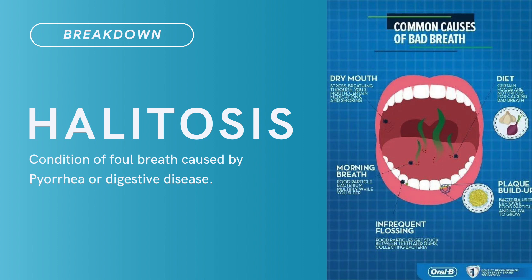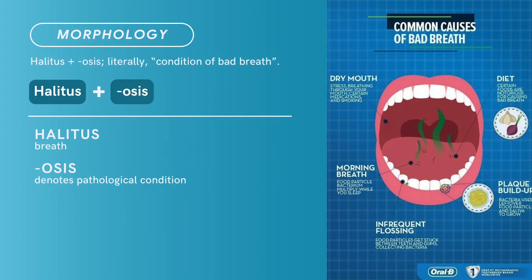Compound term: halitosis. Brief definition: condition of foul breath caused by pyorrhea or digestive disease. Term morphology: compound of halitus plus osis, literally meaning condition of bad breath. Halitus means breath; osis is a suffix denoting pathological condition. There you have it — compound term: halitosis.